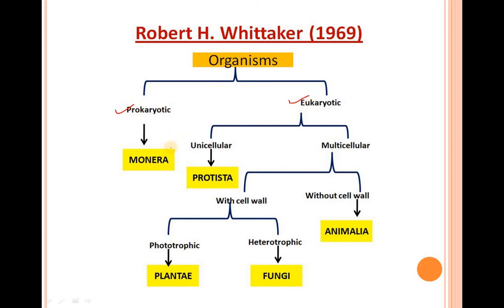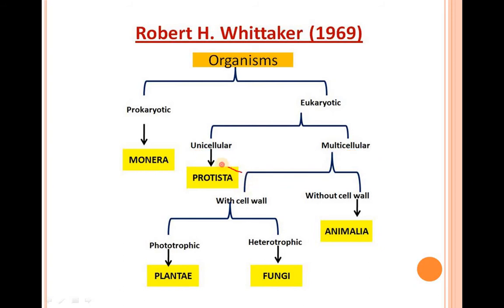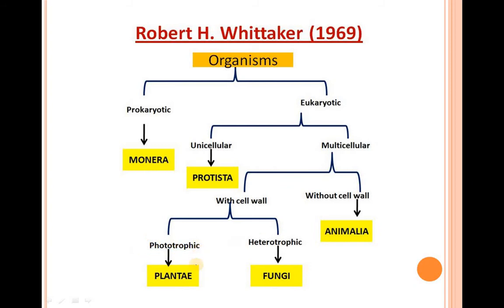Whittaker gave the name 'Monera' to prokaryotic organisms, and divided eukaryotic into two categories: unicellular and multicellular. Unicellular organisms were given the name Protista — for example phytoplanktons. Multicellular organisms were further categorized into two: with cell wall and without cell wall. Without cell wall organisms were given the name Animalia, like human beings. With cell wall organisms were further divided into phototrophic — organisms that synthesize their own food, like plants — and heterotrophic — organisms directly or indirectly dependent on phototrophic organisms, for example fungi.